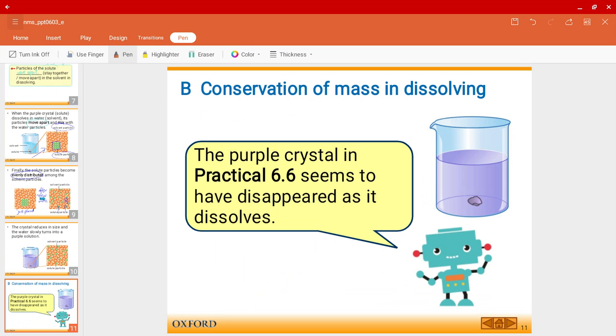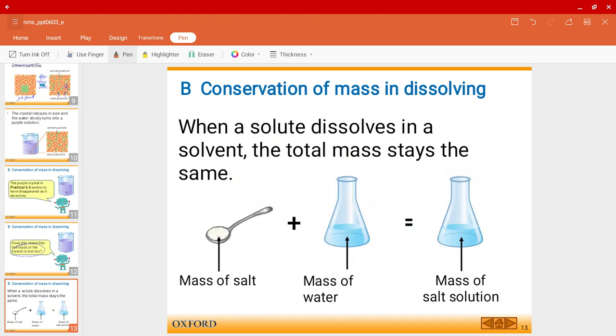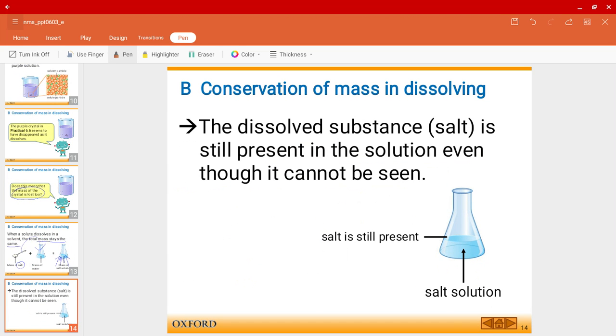So as I just told you, the purple crystal seems to have disappeared. But is that actually the case? Or should I say, does this mean that the mass of the crystal is lost too? Of course, that is not the case. Actually, for example, when we grab some salt and we add it to water, it seems like it has disappeared, right? But actually, the mass will remain the same. It stays the same. It's not that it has disappeared, it's just been dissolved. It's actually still present inside the salt solution here. So the dissolved substance, in this case the salt, is still present in the solution, but we just can't see it. But we are sure that we are certain that the salt is still present inside.